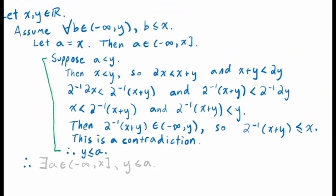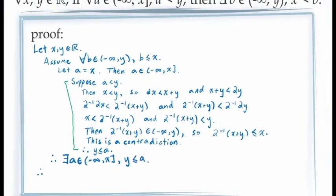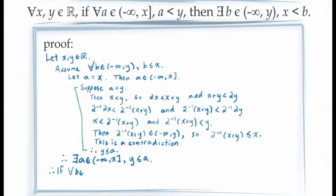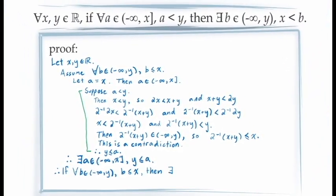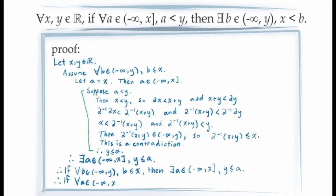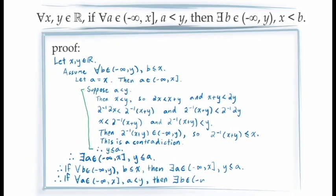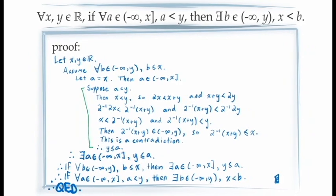At this point, we've shown that for the specific value of a we assigned, that value is in the proper interval and satisfies y ≤ a. This allows us to conclude that if our assumption holds, our conclusion holds, and writing this in contrapositive form gives us the conditional statement we were trying to prove.